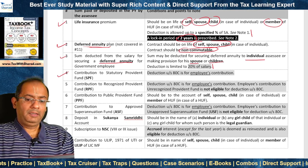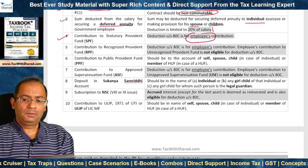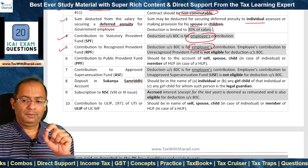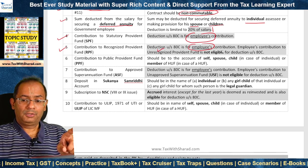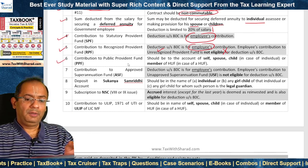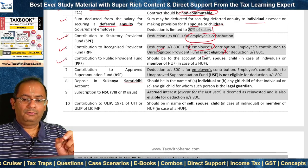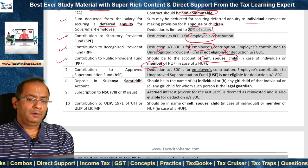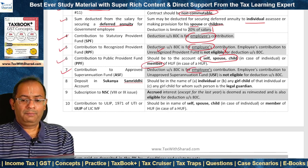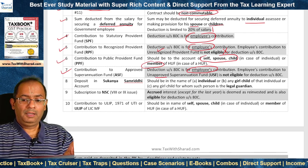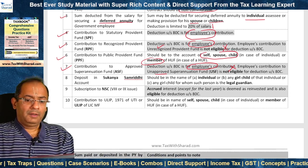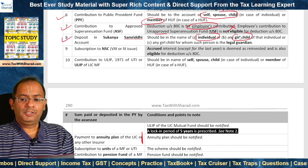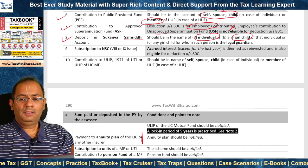Fourth, contribution to Statutory Provident Fund is allowed as deduction — this is only for employee's contribution. Fifth, contribution to Recognized Provident Fund, again only for employee's contribution. Employee's contribution to Unrecognized Provident Fund is not eligible. Sixth, contribution to PPF, and the contribution should be to the account of self, spouse, or child in the case of an individual, or member of HUF. Seventh, contribution to Approved Superannuation Fund — for employee's contribution only; contribution to Unapproved Superannuation Fund is not eligible. Eighth, deposit in Sukanya Samridhi Account in the name of either the individual or any girl child of that individual or any girl child for whom such person is the legal guardian.